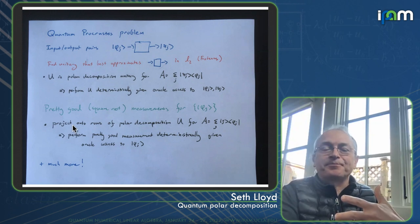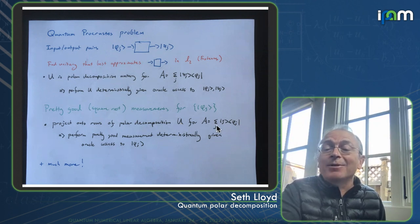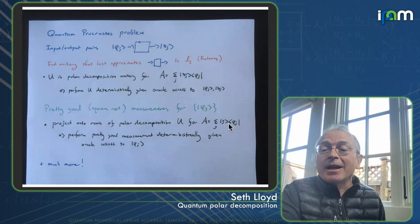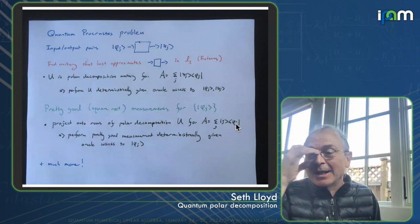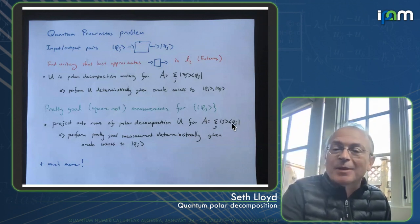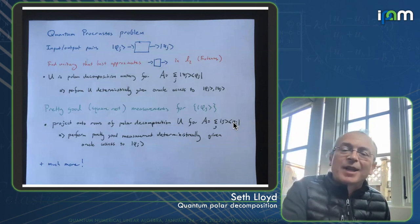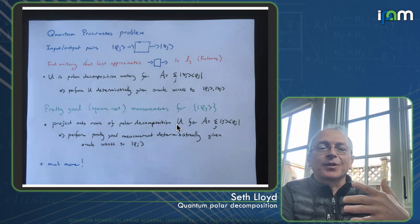So the pretty good measurements for a set of pure states turns out to be the projectors. It turns out to be a von Neumann measurement, which is the set of projectors onto the rows of the polar decomposition unitary, where the polar decomposition unitary is taken for the matrix A, which is just the sum over j of j phi j. So it's really just the matrix that has rows of phi j. So this A is the matrix with rows of phi j.